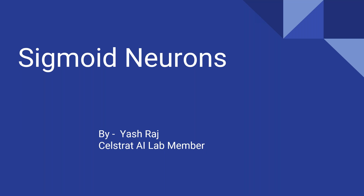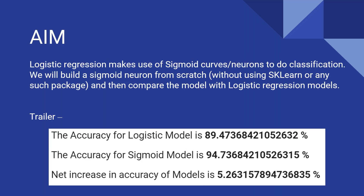Hello everyone and thanks Vishal. My name is Yash and I am an AI Senstrad lab member. Today we will be training sigmoid neurons from scratch. Generally for classification we just import sklearn logistic regression and do our classification. But if you train the same sigmoid neurons with the same loss function that logistic regression uses, you can actually gain about 5% more accuracy, and that is a lot. So today we'll learn how to train these from scratch without using logistic regression, and then we'll compare them.